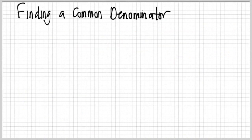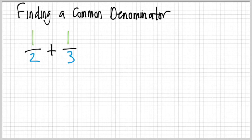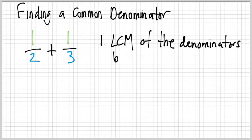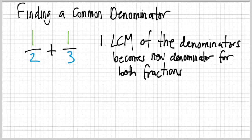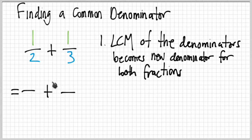If the denominators are not the same, you have to find a common denominator — basically make the denominators the same. Let's look at an example: one-half plus one-third. The first step is to find the LCM — the lowest common multiple — of the denominators, and that LCM becomes the new denominator for both fractions. We're going to rewrite our fractions into a new problem with a common denominator.